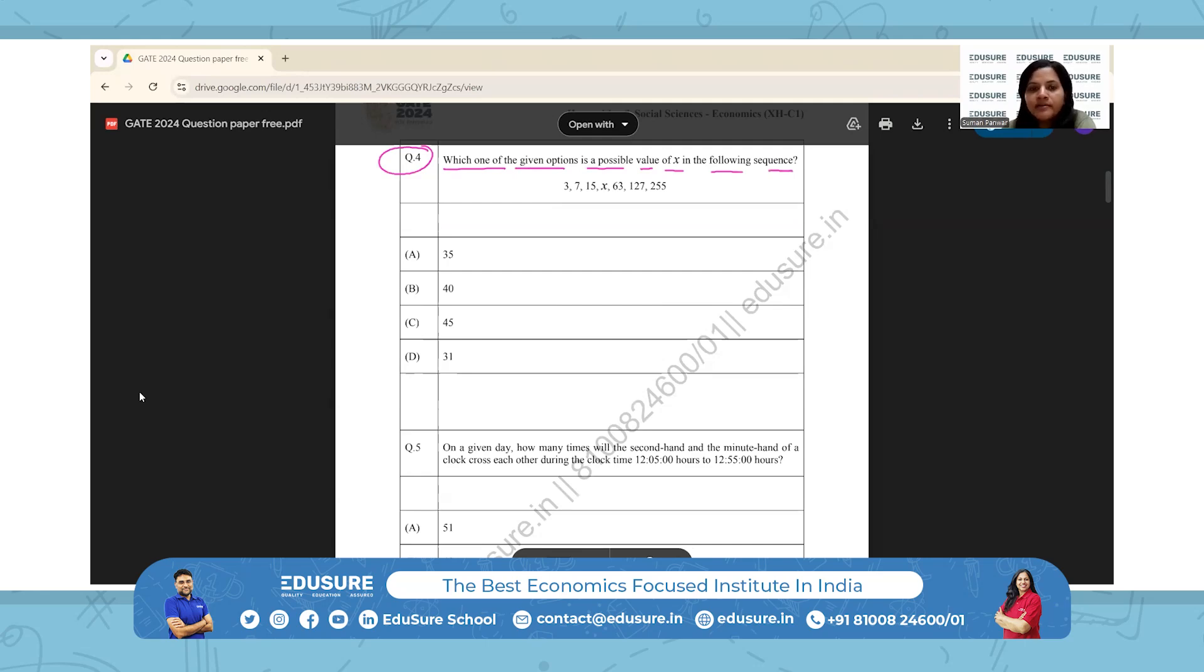There must be a pattern. When we go from 3 to 7, there is a difference of 4. Then when we go from 7 to 15, there's a difference of 8. So when we go from 63 to 127, there's a difference of 64. And then when we go from 127 to 255, there is a difference of 128.